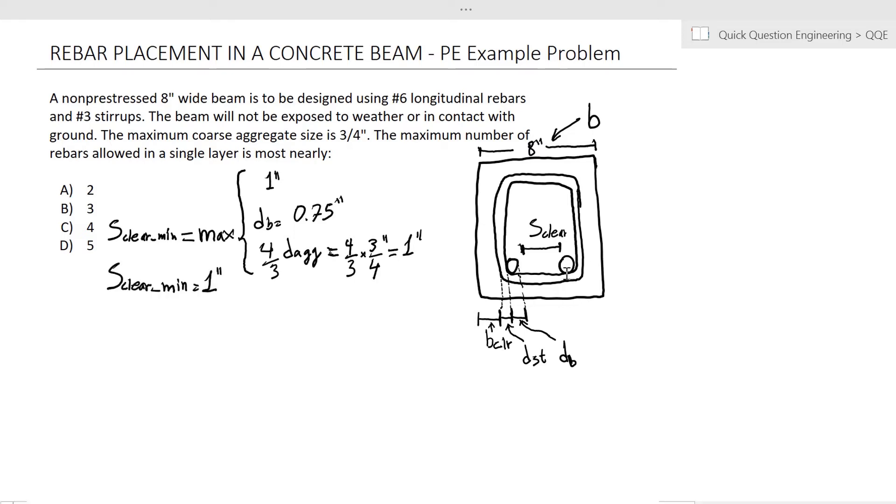If we just try to place two rebars here, we can easily calculate what that clear spacing is using only two rebars, which would be 8 inches minus twice this dimension here from the edge of the beam all the way to the inside edge of the rebar, which is the clear cover, the diameter of the stirrup, and the diameter of the rebar.